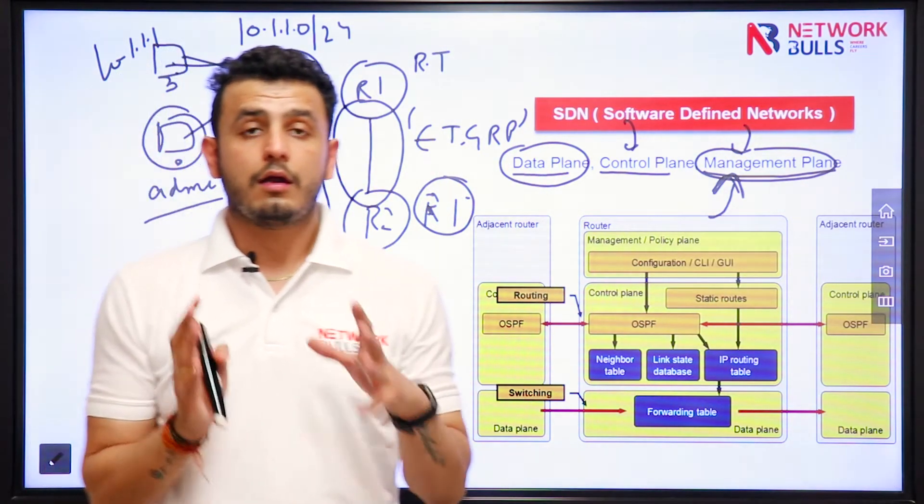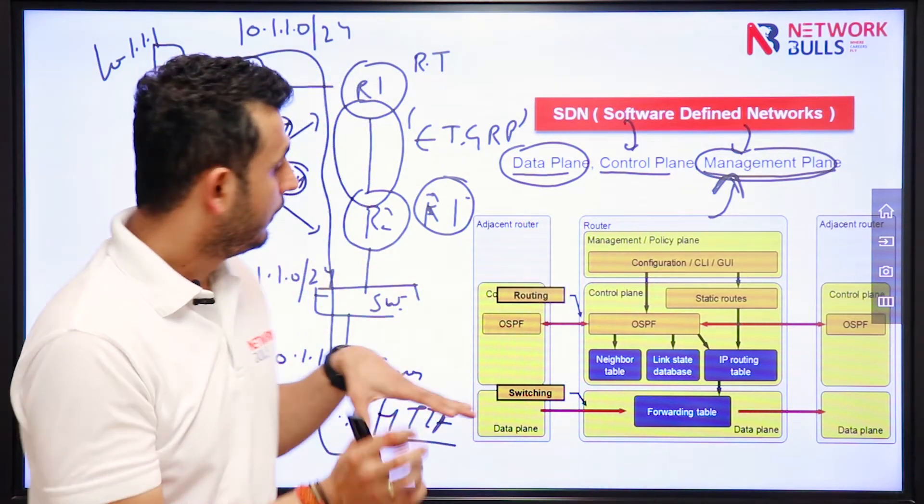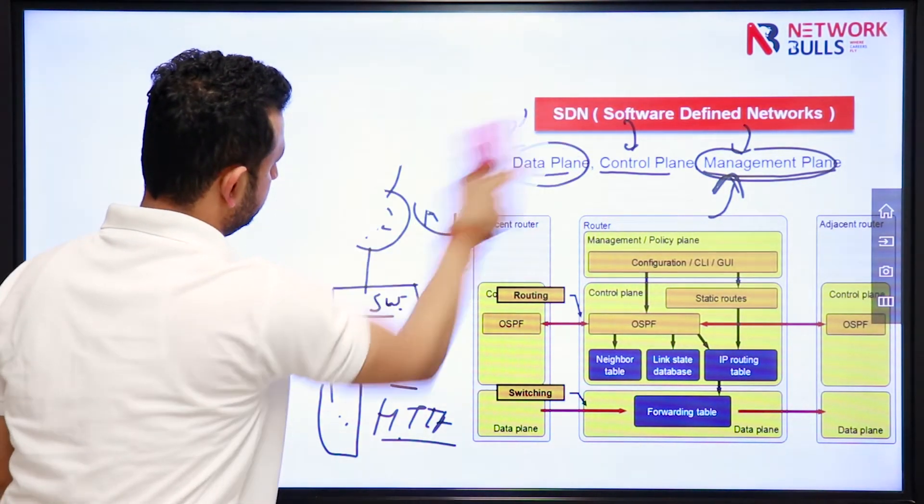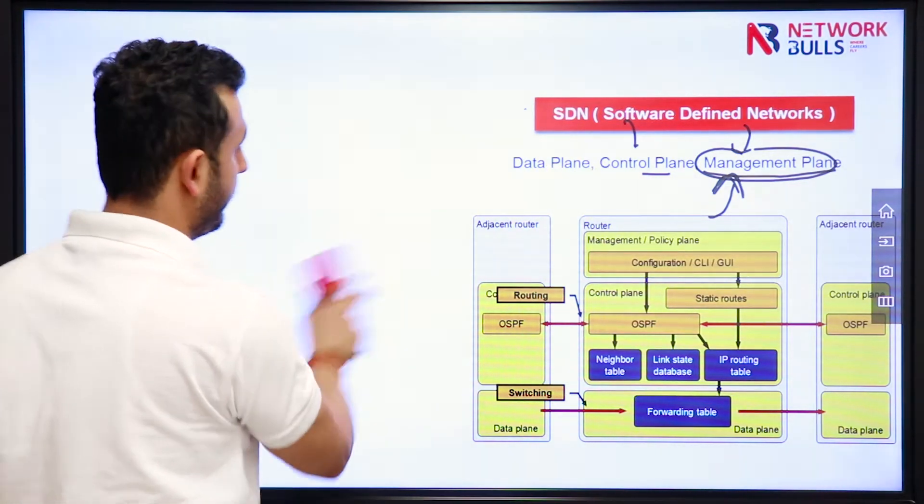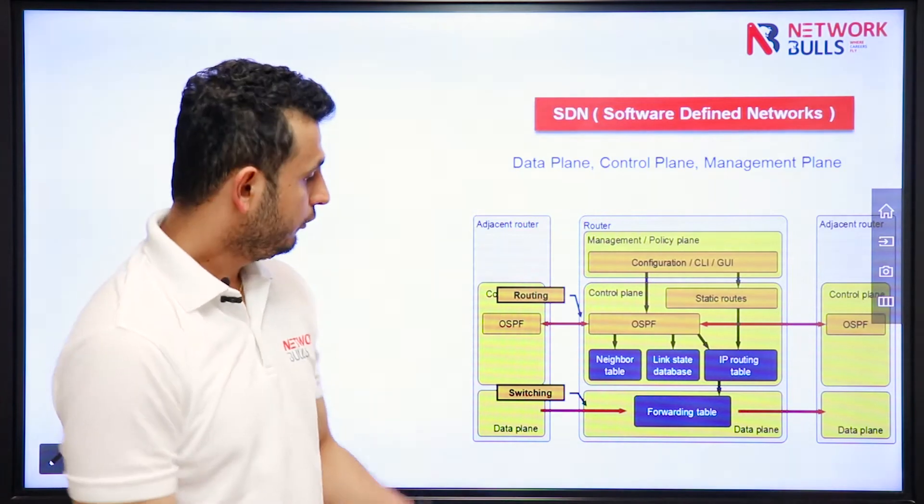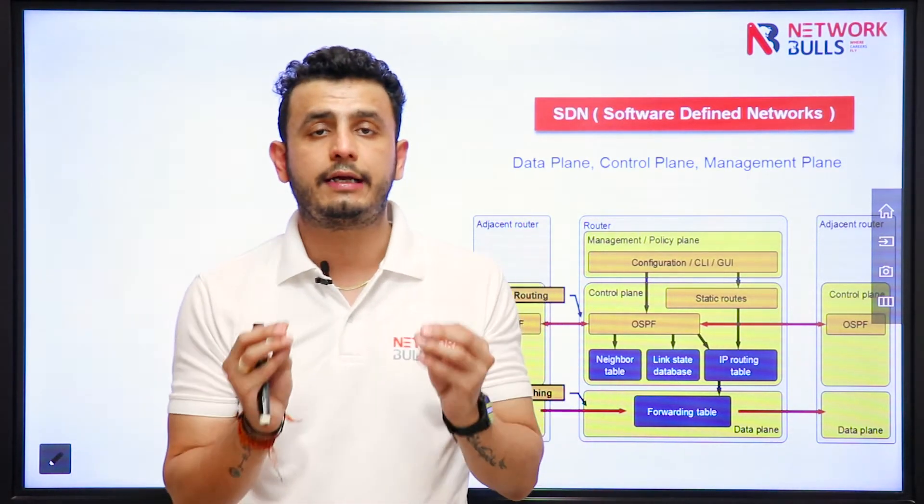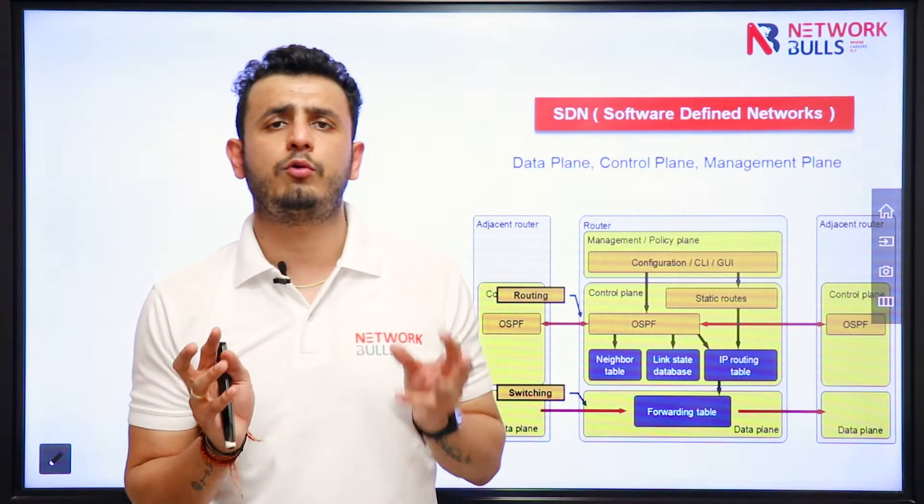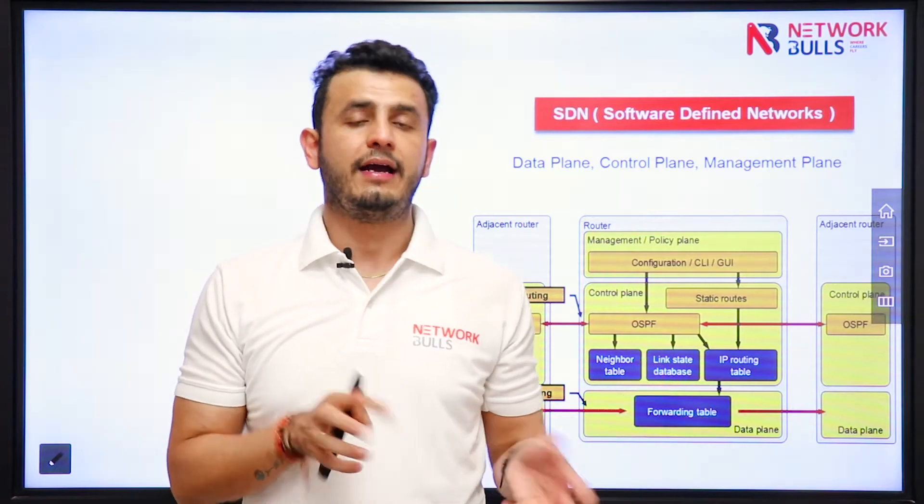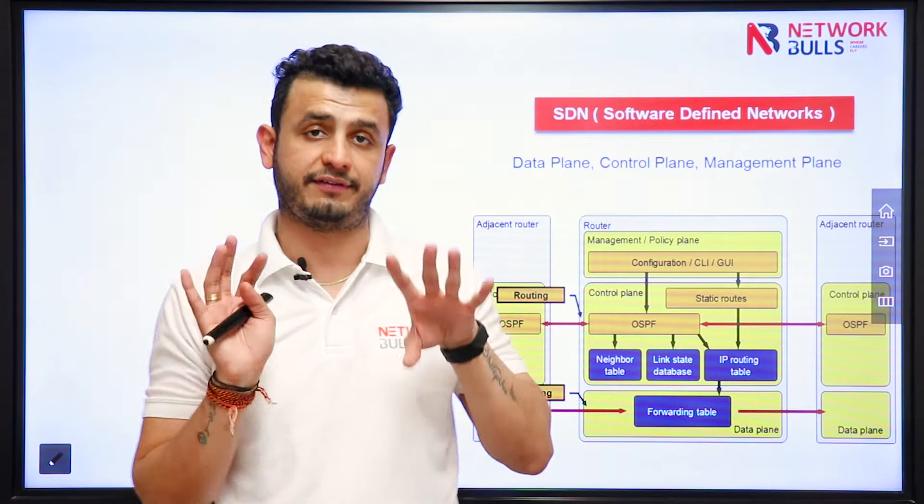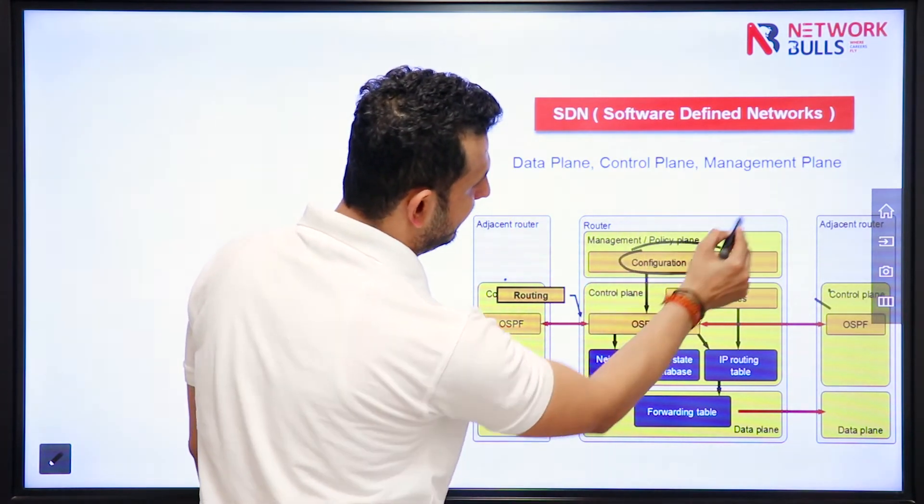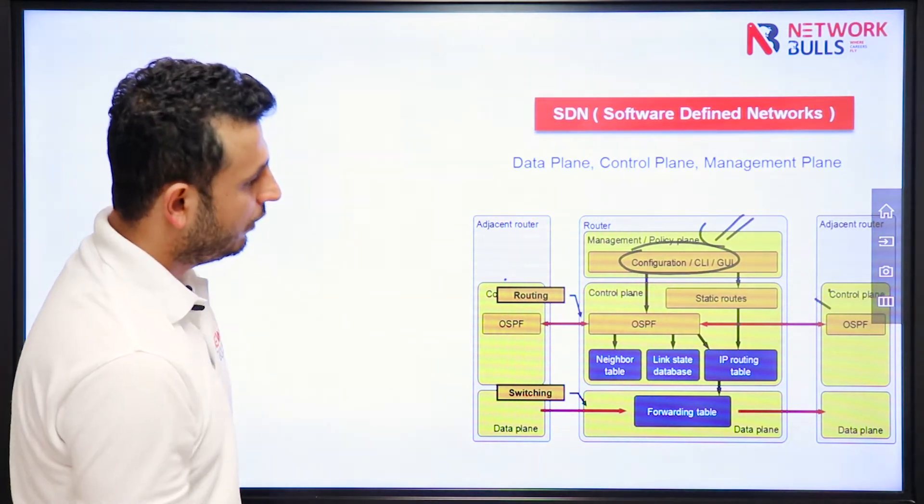If we can see traditional networks like these are three routers, I call this basically distributed control plane. Distributed control plane means you have three routers, on those three routers you are running any routing protocol. So every router has its own control plane. Every router is running its own EIGRP or OSPF process. For example, we have three routers. I will manage the device with the help of CLI or GUI, it is my wish.